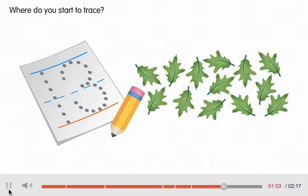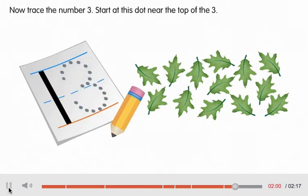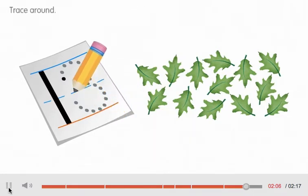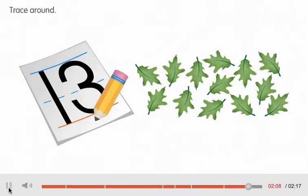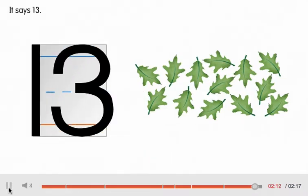Where do you start to trace? Start at this dot at the top. Trace down. Now trace the number 3. Start at this dot near the top of the 3. Trace around. Read the number. It says 13.